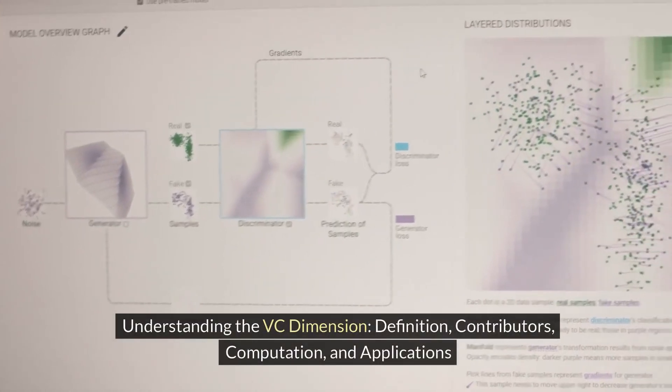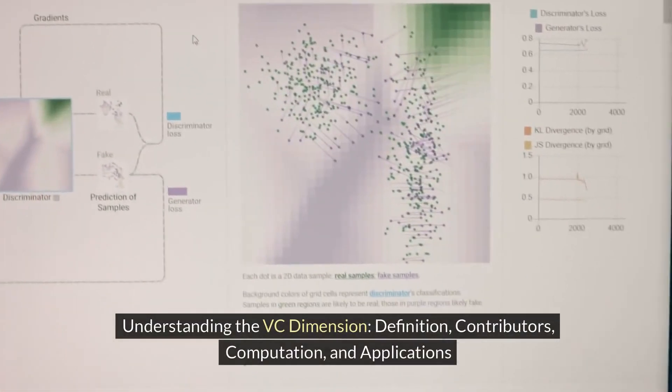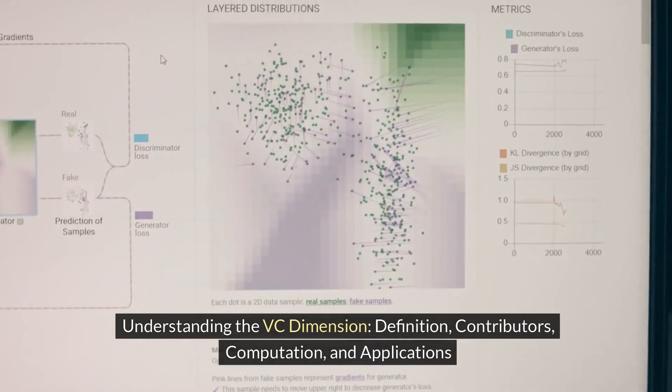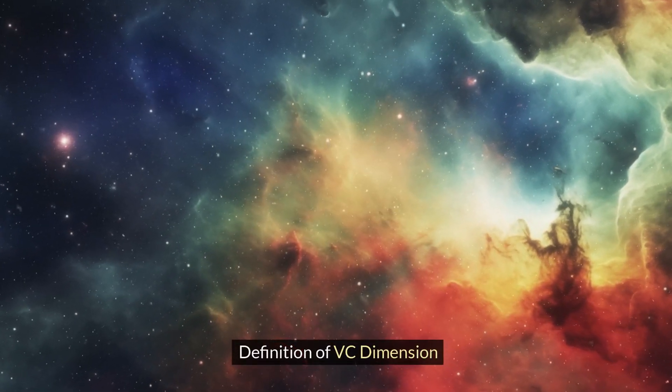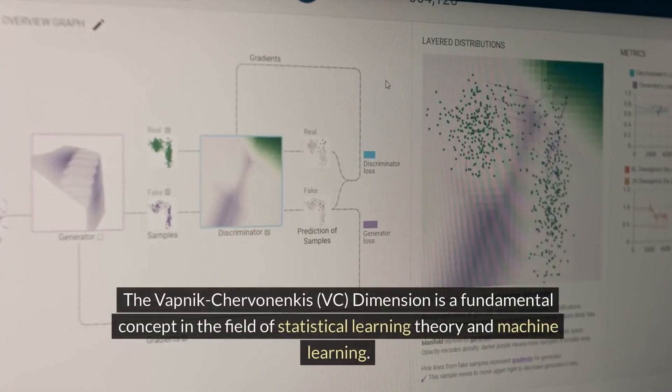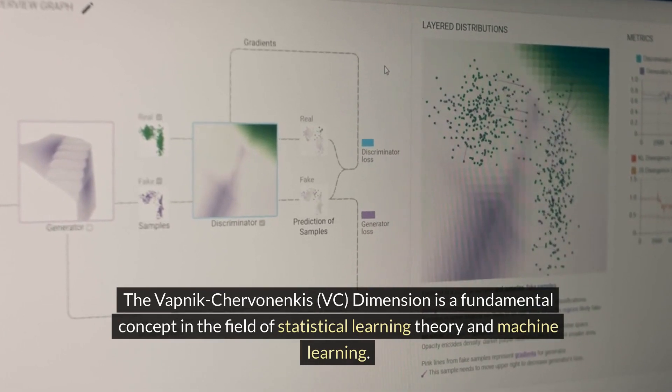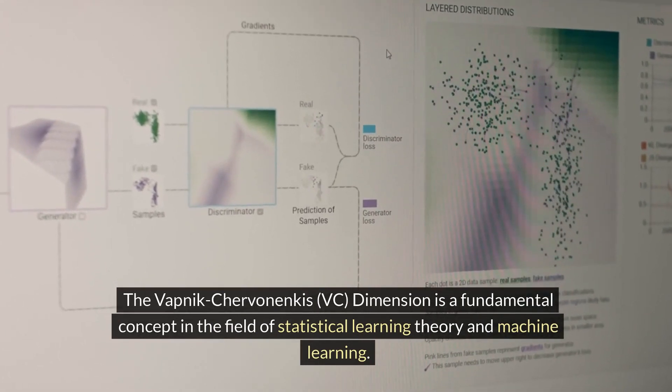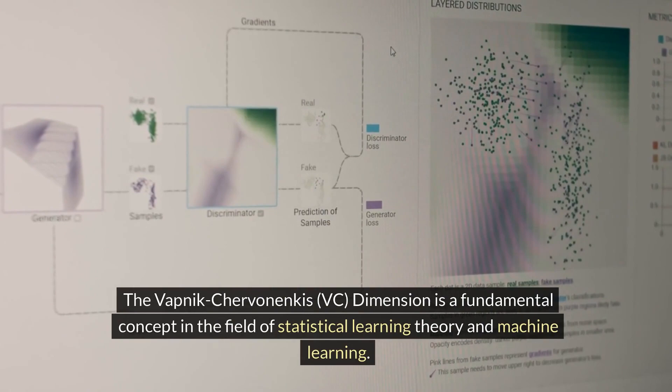Understanding the VC Dimension: Definition, Contributors, Computation, and Applications. Definition of VC Dimension. The Vapnik-Chervonenkis VC dimension is a fundamental concept in the field of statistical learning theory in machine learning.